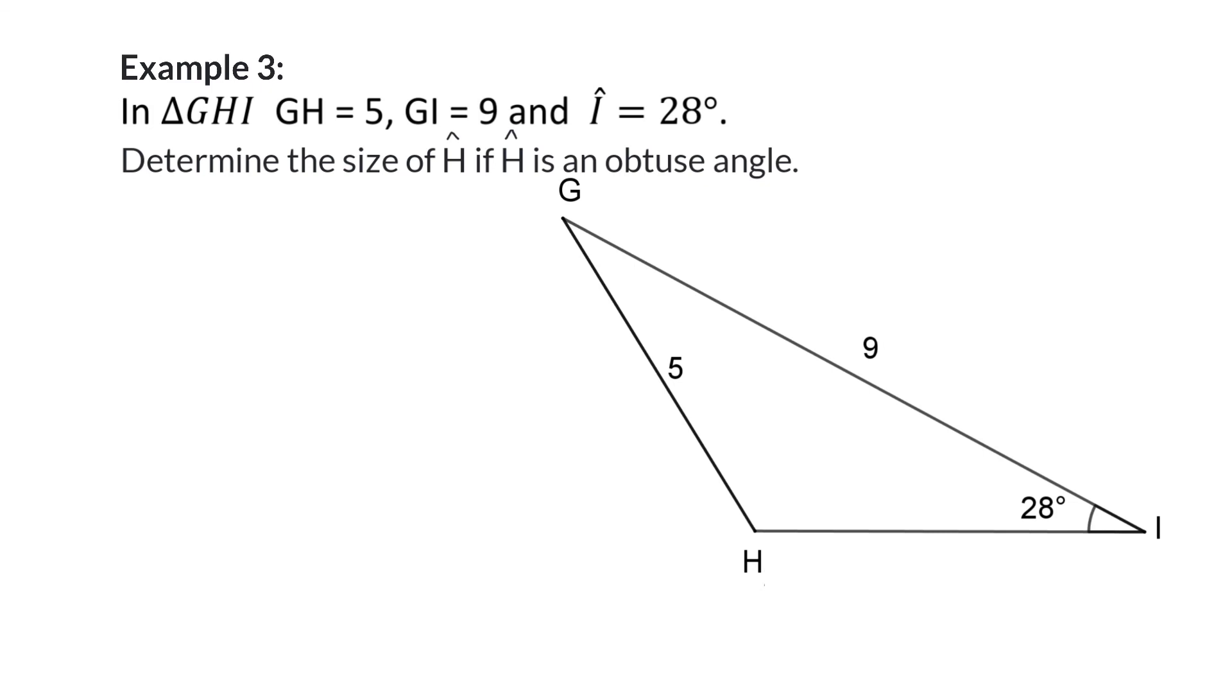Example 3. In triangle GHI, GH is 5, GI is 9, and angle I is 28 degrees. Determine the size of H if H is an obtuse angle. Here we are given two sides and an angle, and once again we have a complete pair of side and angle in I, and because we are determining angle H, the other pair will be pair H.